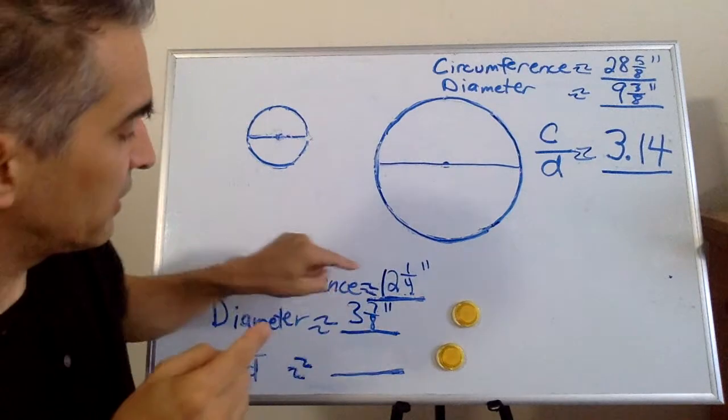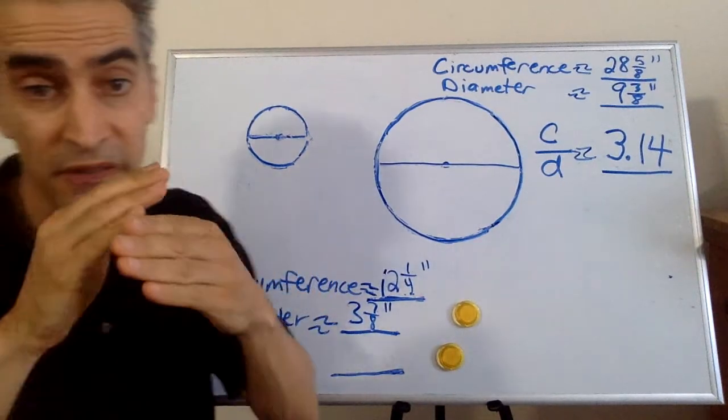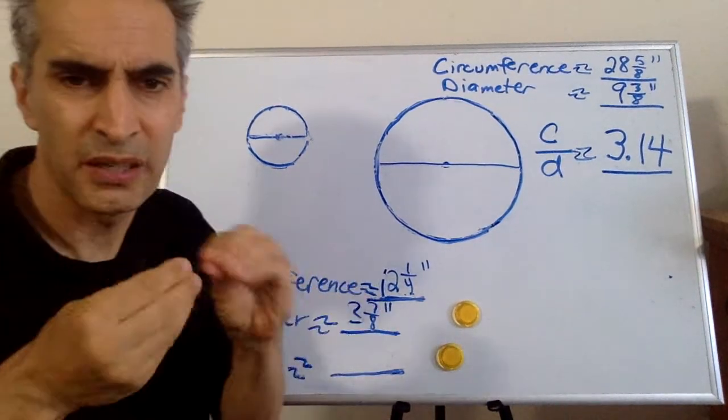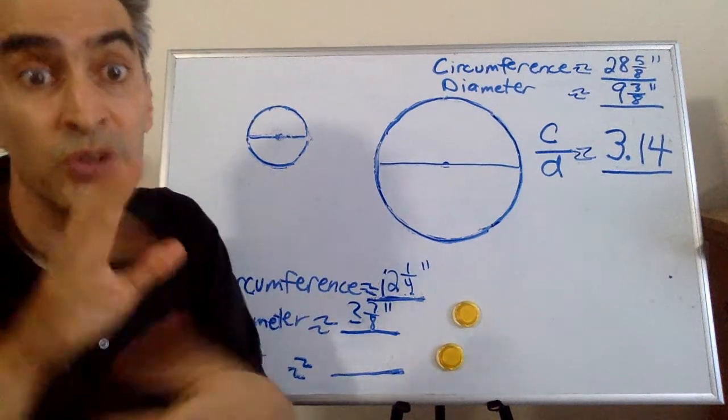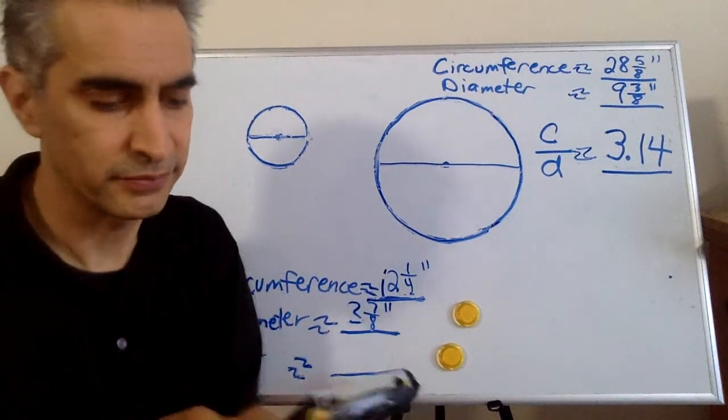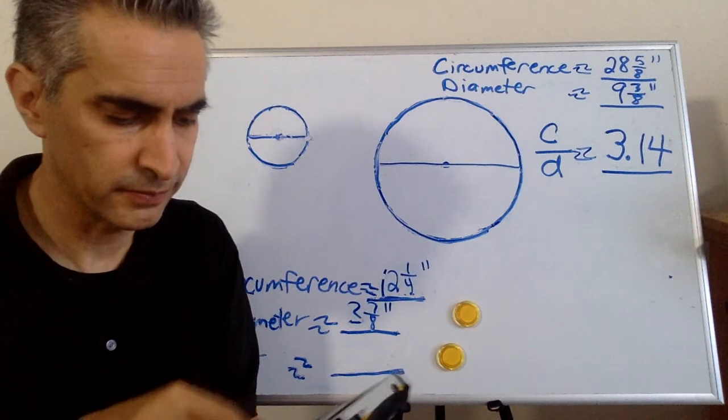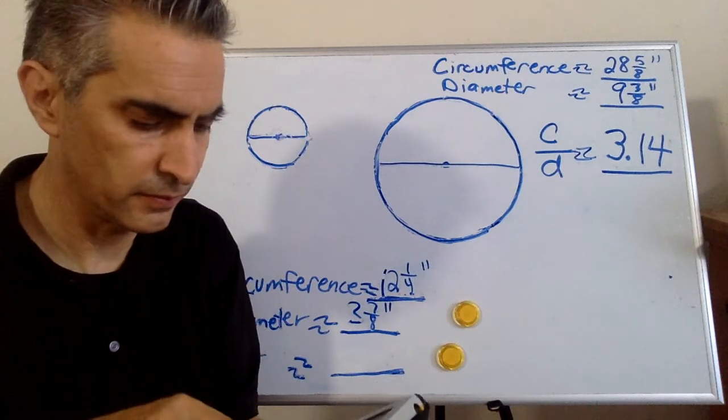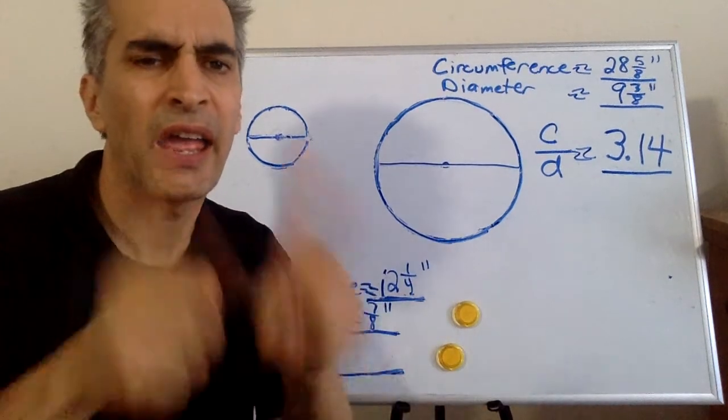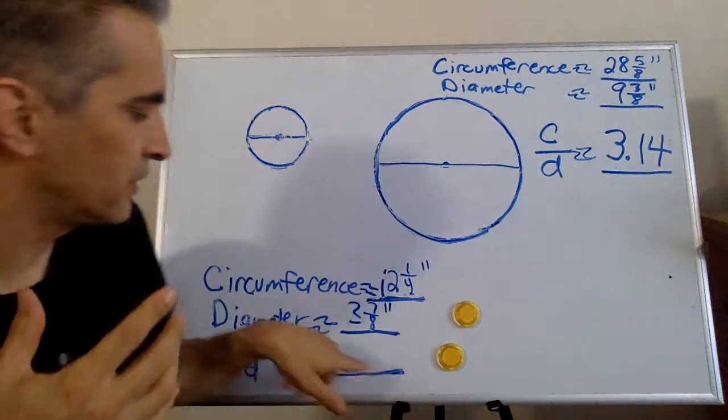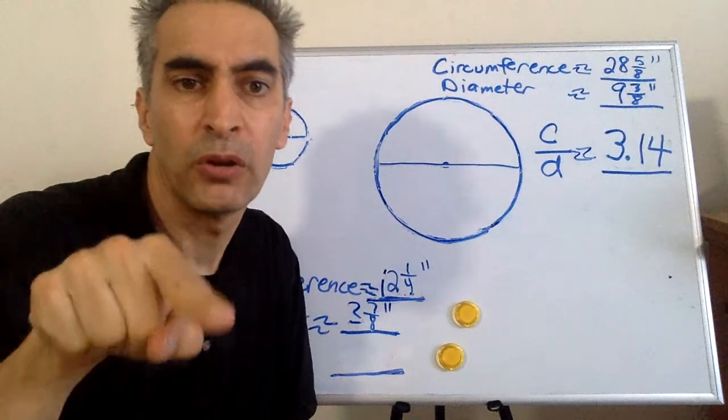Next, what are we going to do? We have to take this number and divide it by this number, and you can use a calculator. The answer is around 3.14.